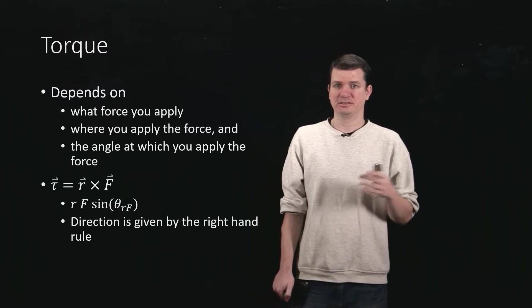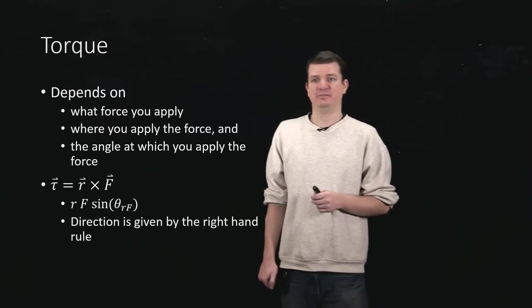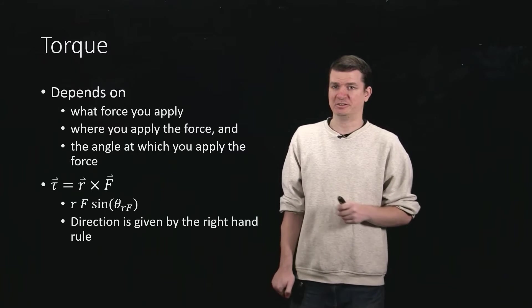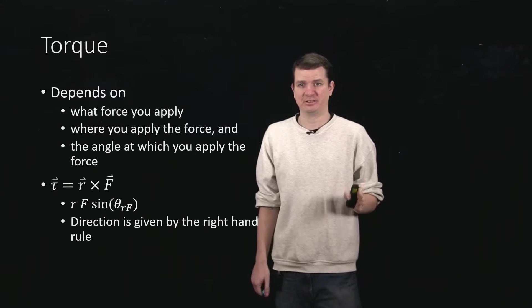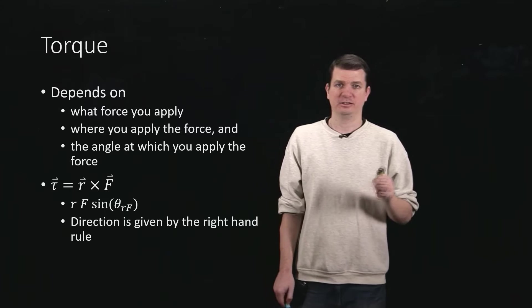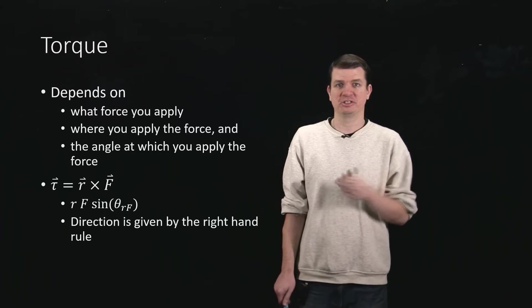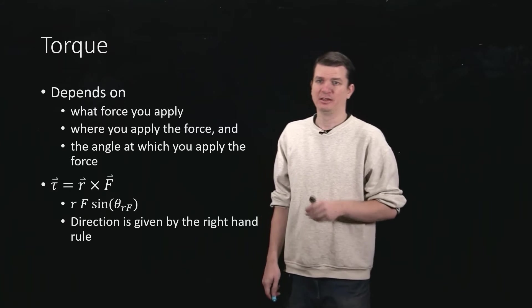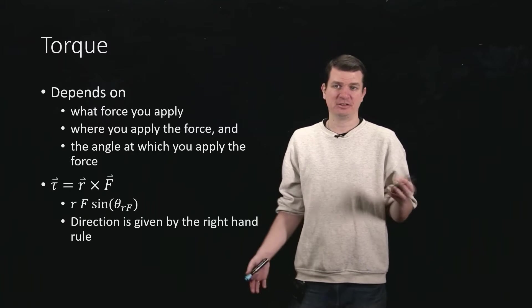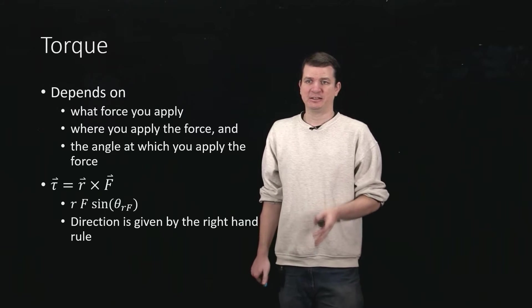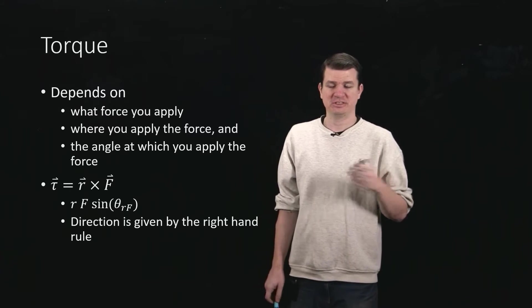And the way that we encapsulate all of that is through this model for torque. Torque is just r cross F, where r is the distance from the hinges. It's actually a vector, so what we mean there is the position vector of the point at which you apply the force, and the origin of that vector is the hinge or pivot point for this object. And then you cross that into the actual force vector that you're using. And that cross product then gives you another vector, which is the torque.